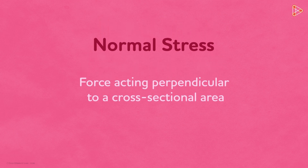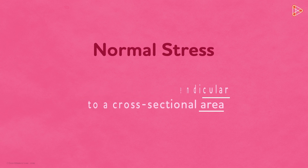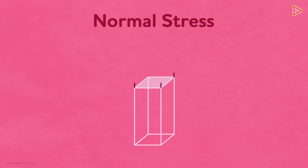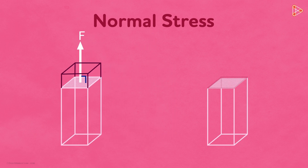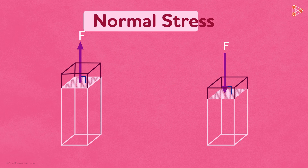Now let's come back to normal stress. It's a force acting perpendicular to a cross-sectional area. For example, let's take an object, say a beam, and try stretching it. The normal force that acts on it is perpendicular to the cross-sectional area. And if we try compressing it, the force will be perpendicular but in the opposite direction. So it either acts in one direction or in the opposite direction. That's the basic concept of normal stress.